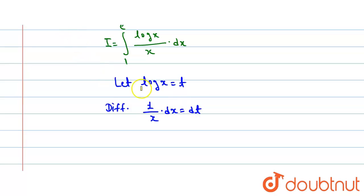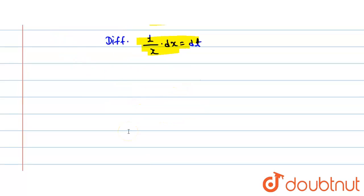Now put the value in this integral, so we get I is equal to integration 1 to e. We assume log x is equal to t, and 1 upon x dx is equal to dt.